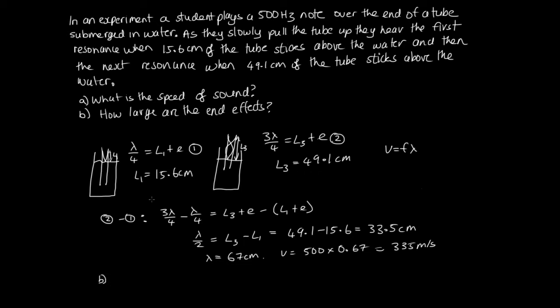Okay, and then part B says how large are the end effects. So now we're asked to calculate E. If we look at equation 1, we now know everything in equation 1 apart from E. So let's rearrange it to make E the subject. We've got E, the end effects, is equal to lambda over 4 minus L1.